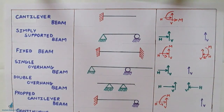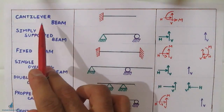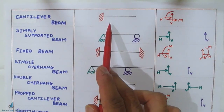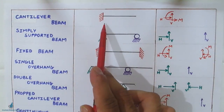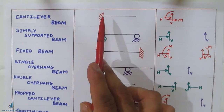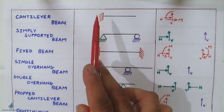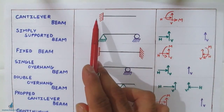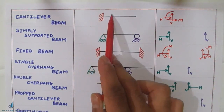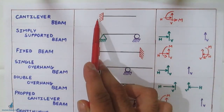There are basically seven types of beams. The first one is a cantilever beam. The symbol is shown here — one side is free and another side is fixed. So if a beam has one side free and another side fixed, it is known as a cantilever beam. This is the symbol of the fixed end.